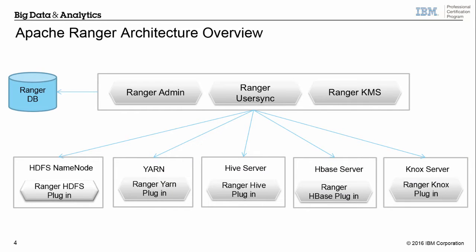Here's a 50,000-foot view of the Apache Ranger architecture. On the left, you'll see that there's a database required to store the Ranger policies and other information that's going to support the Ranger application. There's a web-based administration interface called Ranger Admin. There is Ranger UserSync, which is used to bring in user IDs from the operating system or LDAP. And then there's Ranger KMS, which stands for Key Management Service — it's based on Apache Key Management Service and is used to support encryption in HDFS.